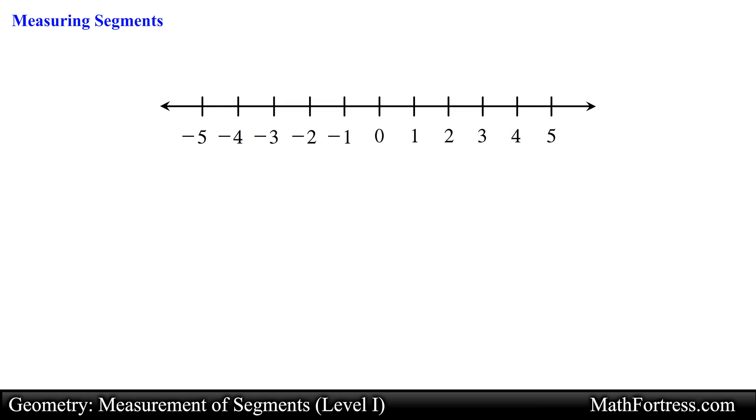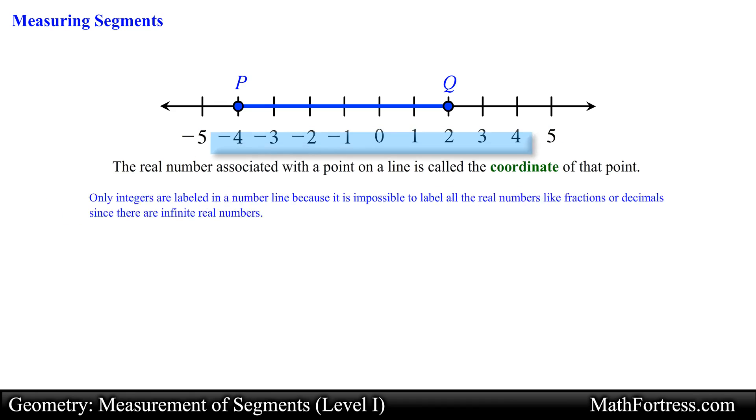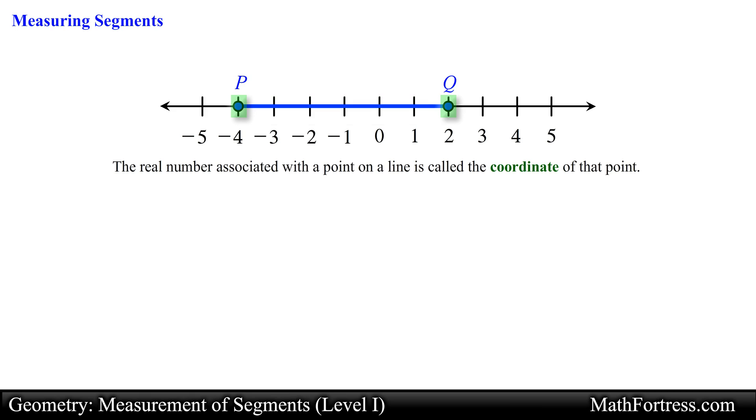We can also use a number line to find the measurement of a segment. The real number associated with a point on a line is called the coordinate of the point. For example, the following line segment is formed by point P and point Q, with point P located at the coordinate negative 4 and point Q located at the coordinate positive 2. Usually only integers are labeled in a number line because it is impossible to label all the real numbers like fractions or decimals, since there are infinite real numbers. The measurement of this line segment can be determined by measuring how far apart the end points are from one another. In other words, we measure the distance between the points. In this case, the measurement of segment PQ is 6.